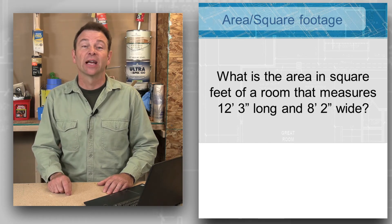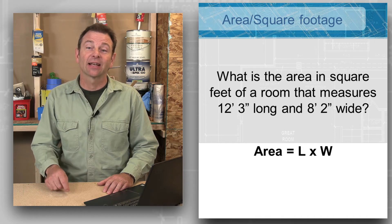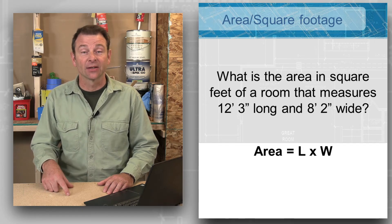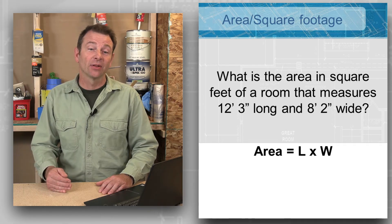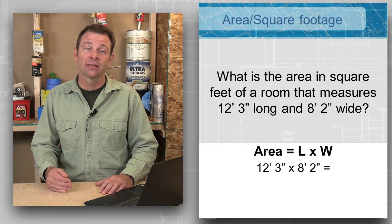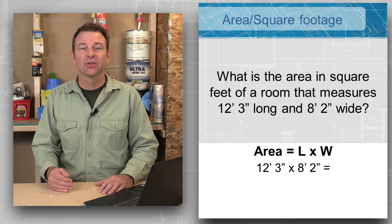Remember our equation for solving area is going to be simply length times width when we're talking about a rectangle, which this room is a rectangle. In this problem, we have our length as 12 foot 3 inches and our width as 8 foot 2 inches.